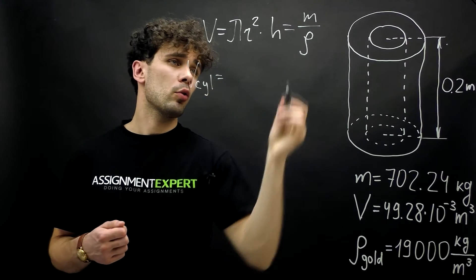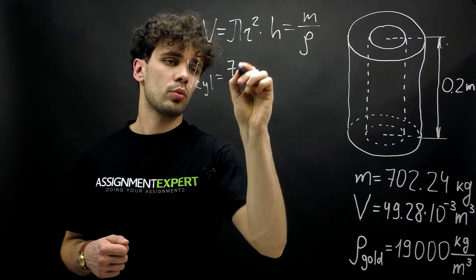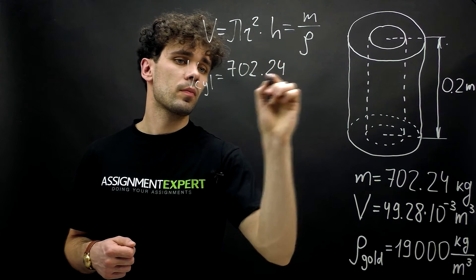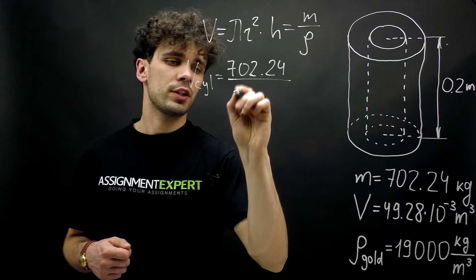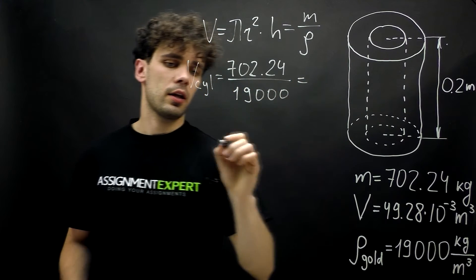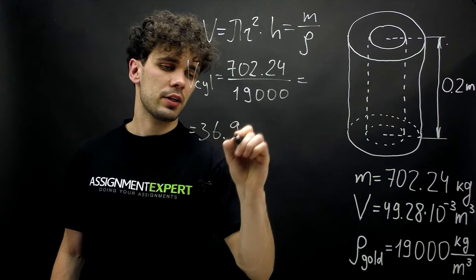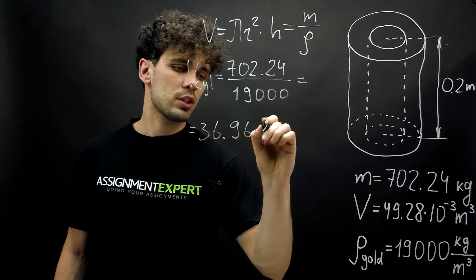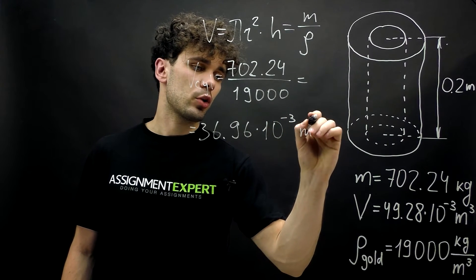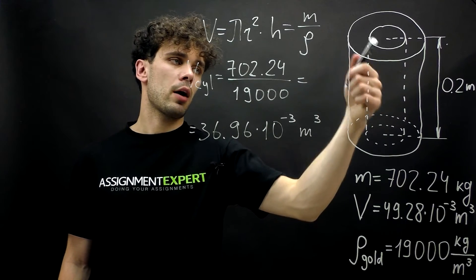And this volume equals 702.24 over 19,000. And this gives us 36.96 times 10 raised to the negative third power meter cubed. This is the volume of the cylinder without the inner cavity.